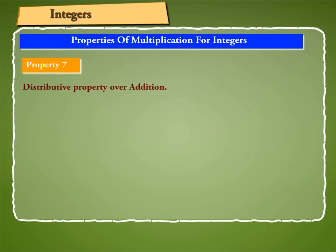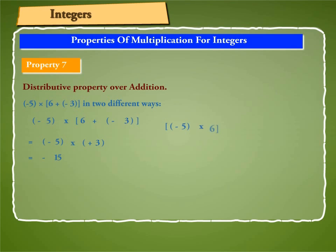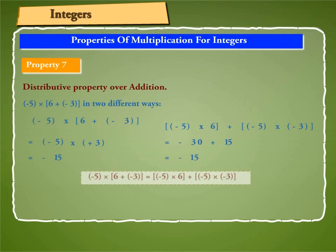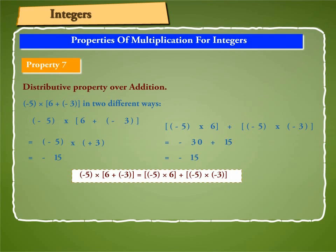Property 7: Distributive property over addition. We can compute minus 5 into (6 plus minus 3) in two different ways. First, minus 5 into (6 plus minus 3) equals minus 5 into 3 equals minus 15. Second, minus 5 into 6 plus minus 5 into minus 3 equals minus 30 plus 15 equals minus 15. Thus, minus 5 into (6 plus minus 3) equals minus 5 into 6 plus minus 5 into minus 3.